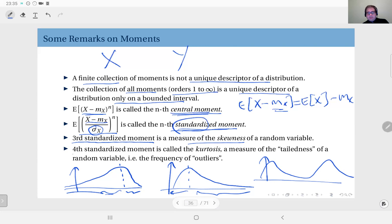And the fourth standardized moment is called kurtosis. It's a measure of the tailedness. So what does it mean? It means if the distribution dies out towards the infinity fast, we say it has small tails.